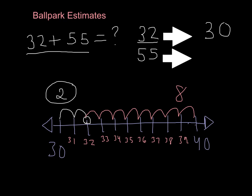Now let's look at 55. So we know it's in between 50 and 60. And this digit is a 5. So we're going to go up to 60.